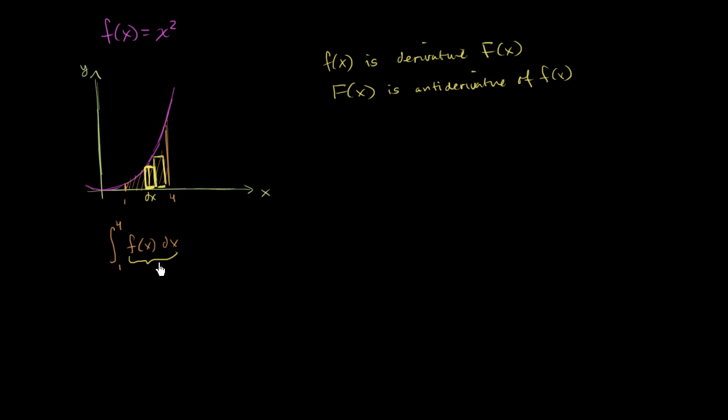Then I can evaluate this thing, and we do a whole video on conceptually understanding why this makes sense, we can evaluate this by evaluating the antiderivative of f, or an antiderivative of f, at 4, and from that subtract the antiderivative evaluated at 1. So let's do it for this particular case right over here.